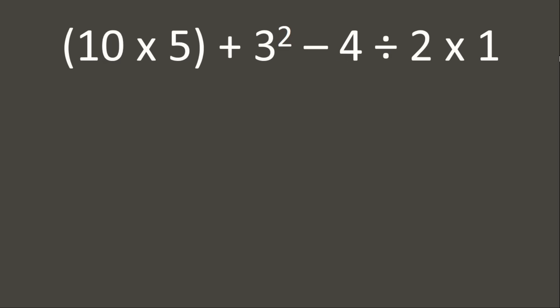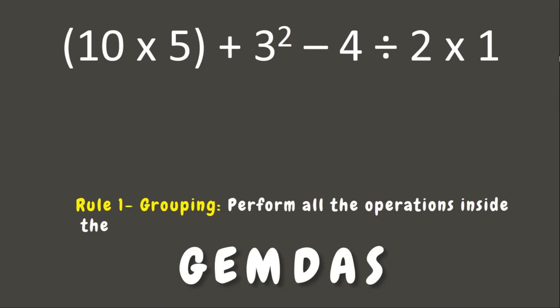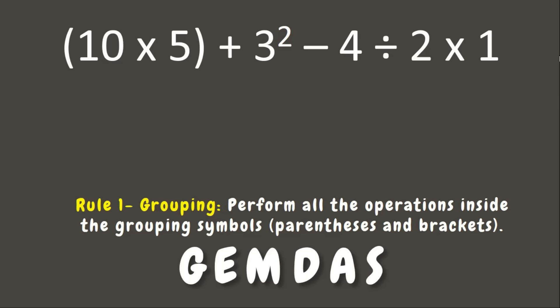Since this numerical expression has more than two operations, we need to follow the GEMDAS rule. The first rule is grouping symbols. We need to look and find grouping symbols in this expression. I can see parentheses, so we need to perform the operation inside: 10 times 5. 10 times 5 is 50. Great job! Now let us copy the remaining expression.